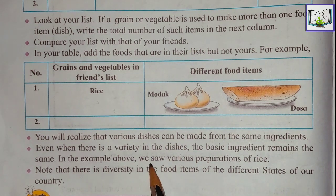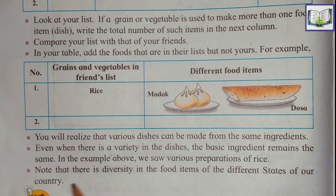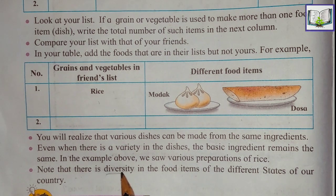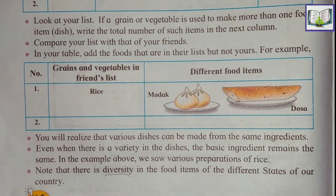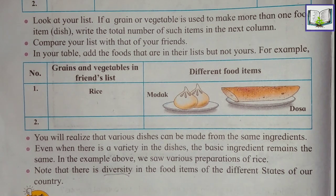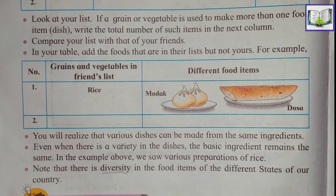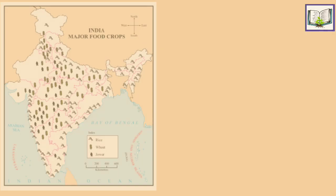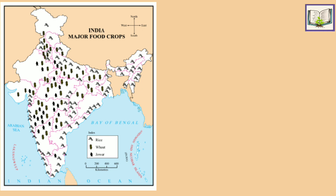In the example above, we saw various preparations of rice. Note that there is diversity in the food items — diversity means lots of changes and varieties in the food items of the different states of our country. Every state makes food in different ways, but the main ingredients are almost the same. This is a map of India showing the major food crops: rice, wheat, and jawar.